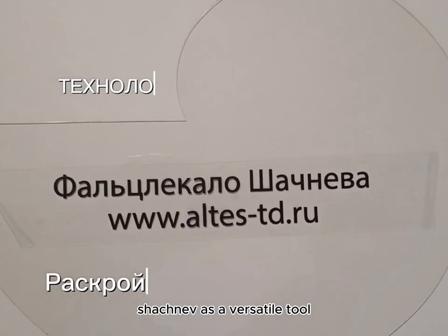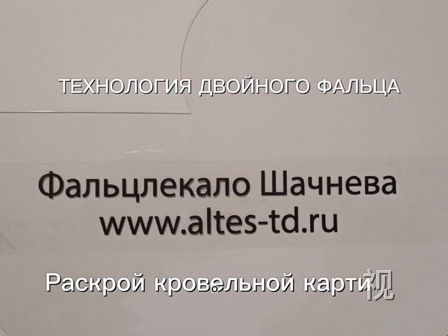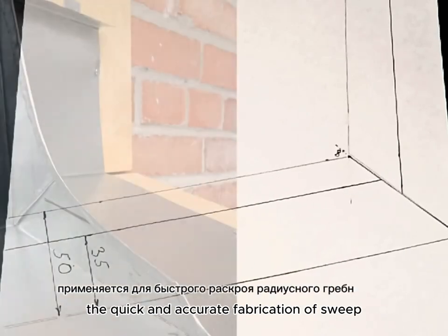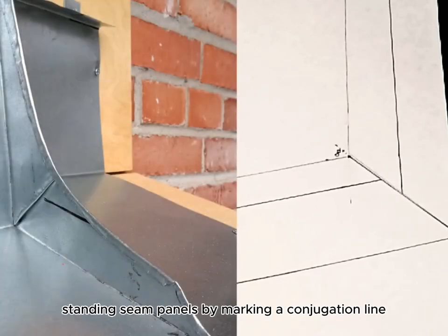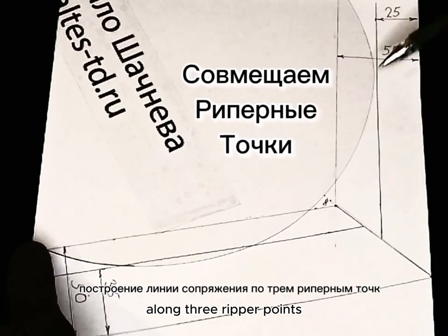Falscurve Shachnev is a versatile tool used in the installation of standing seam metal roofing. Its primary function is to facilitate the quick and accurate fabrication of sweep standing seam panels by marking a conjugation line along three ripper points.